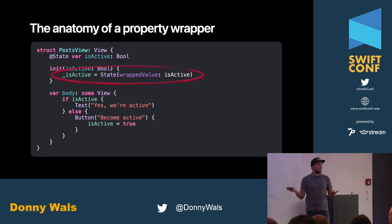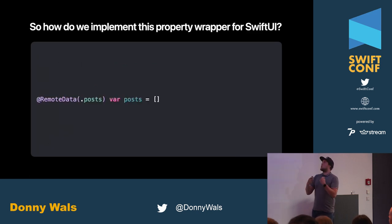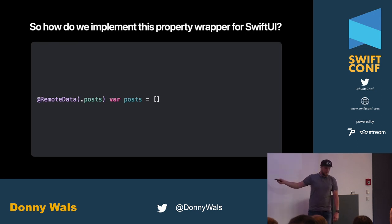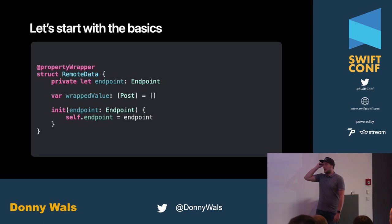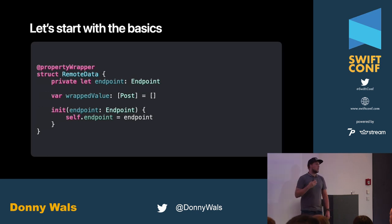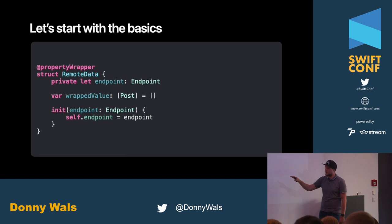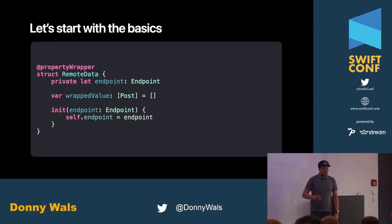Now, how do we implement our own property wrapper with SwiftUI? Let's define our RemoteData struct. It's annotated as a @propertyWrapper. I have my endpoint that I want to use, and I have a wrappedValue which is an array of posts — in the real world you'd make this generic, but I've hardcoded it for posts to avoid talking too much about generics. We initialize RemoteData with an endpoint and set the endpoint. This doesn't do anything yet, but it is a property wrapper we could use.